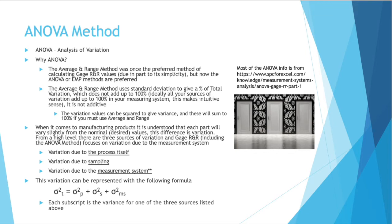So why ANOVA? The average and range method was once the preferred method of calculating gauge R&R values due to its simplicity, but now the ANOVA or EMP methods are preferred. The average and range method uses standard deviation to give a percentage of total variation, which does not add up to 100%. Ideally, all your sources of variation should add up to 100%. You can square the variation values in the average and range method to make them sum to 100%, and the results are then pretty close to the ANOVA or EMP methods.